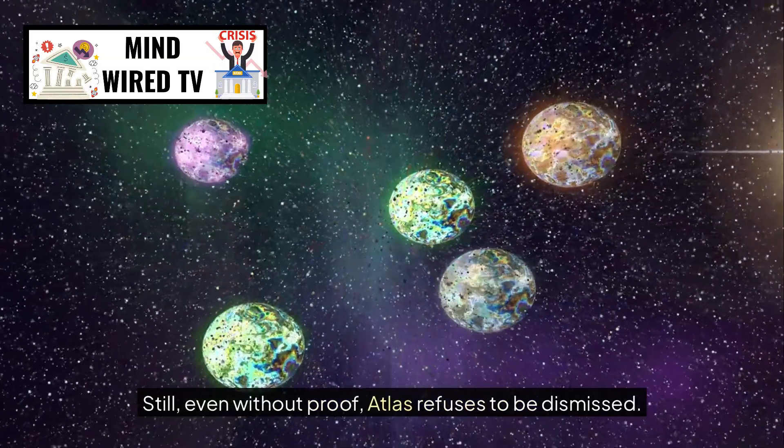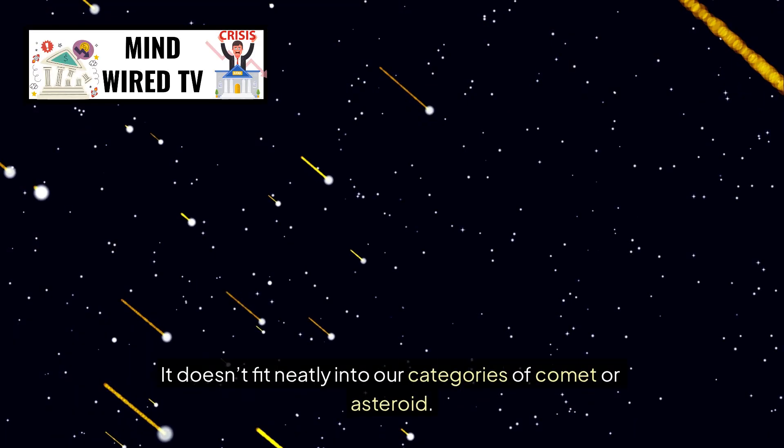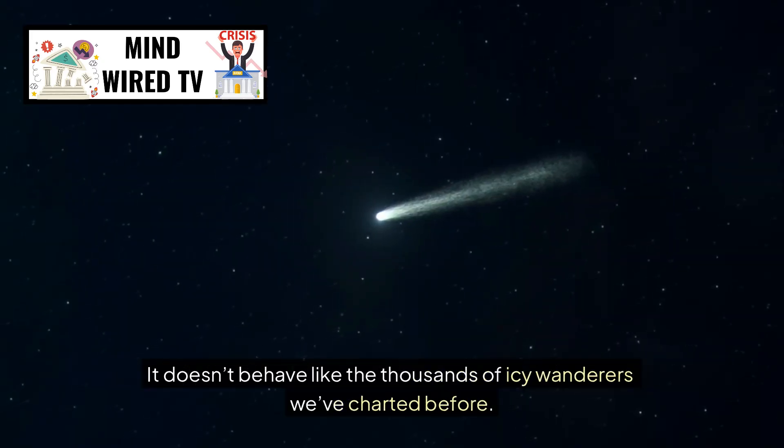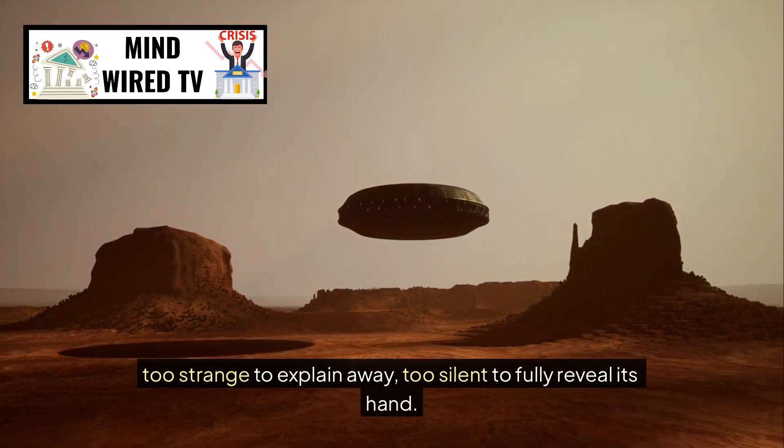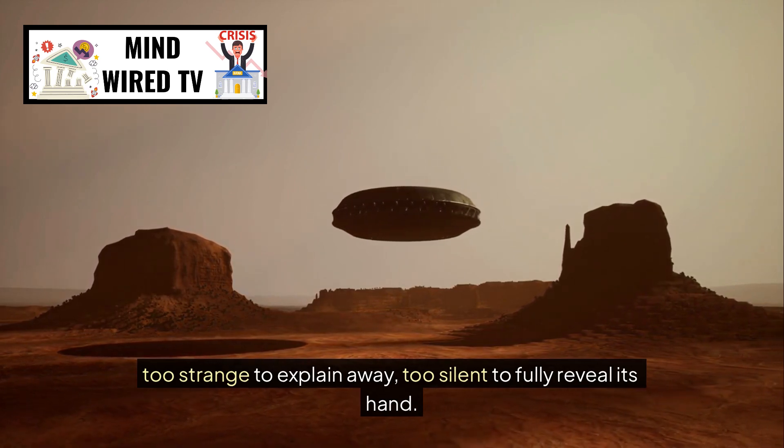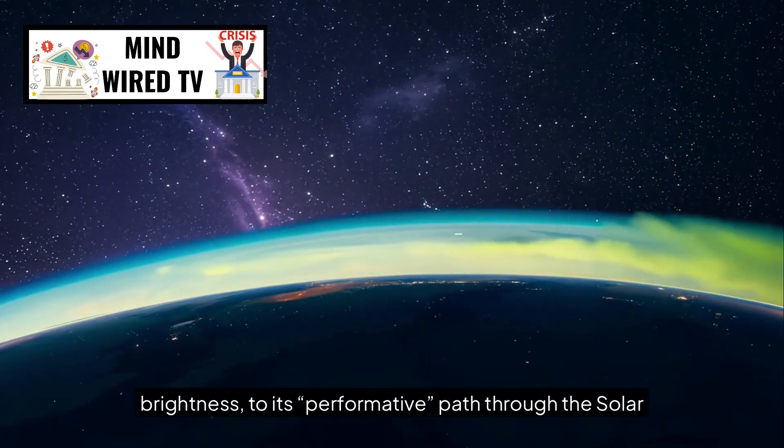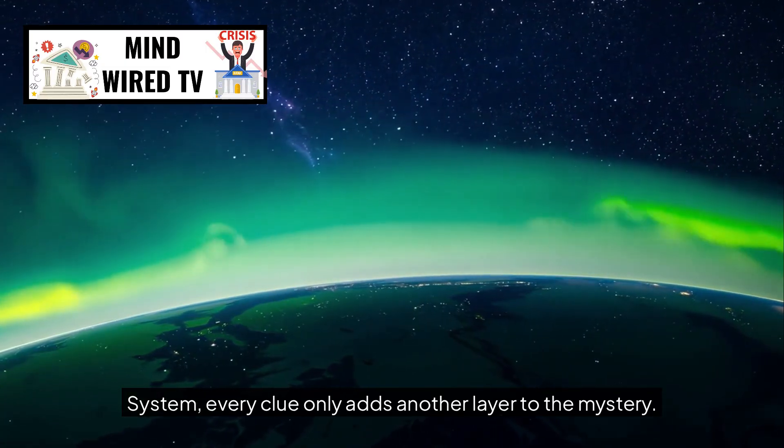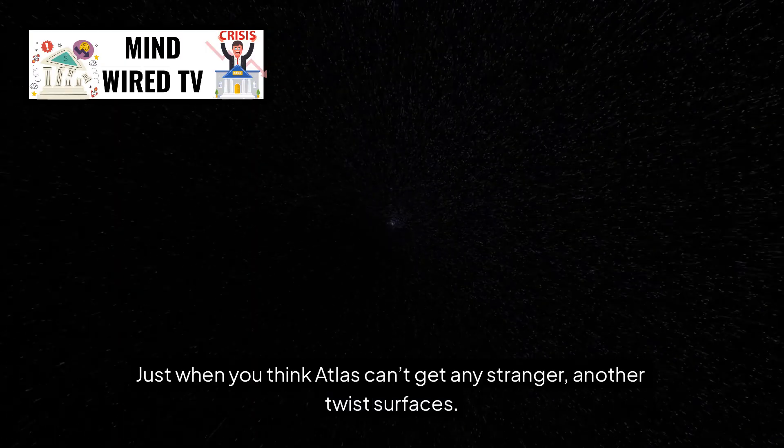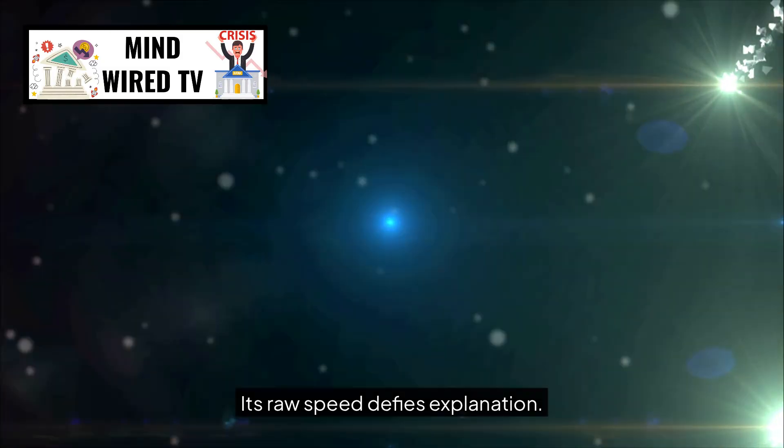Still, even without proof, Atlas refuses to be dismissed. It doesn't fit neatly into our categories of comet or asteroid. It doesn't behave like the thousands of icy wanderers we've charted before. Instead, it lingers in that uncomfortable middle ground, too strange to explain away, too silent to fully reveal its hand. From its impossible size to its unsettling brightness, to its performative path through the solar system, every clue only adds another layer to the mystery. Just when you think Atlas can't get any stranger, another twist surfaces.